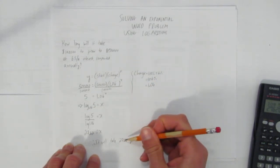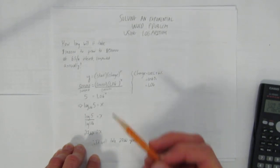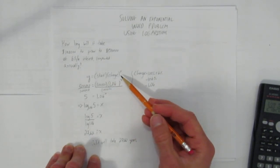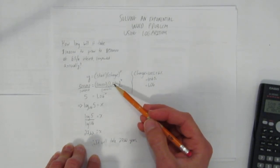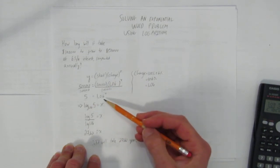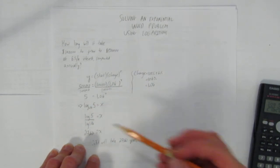So, what did we do? We solved an exponential word problem using logarithms. We used the exponential equation, we subbed in, we got the equation simplified, and then we converted it to a logarithm and solved.